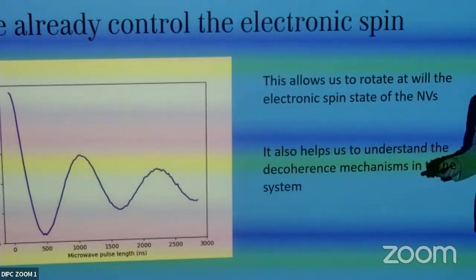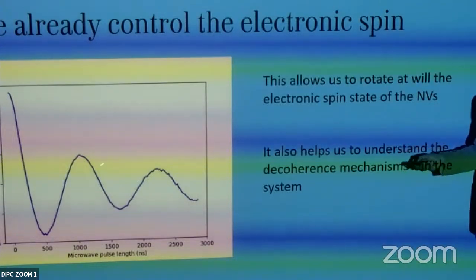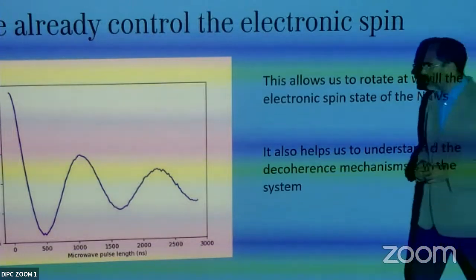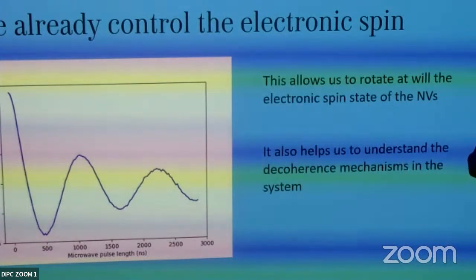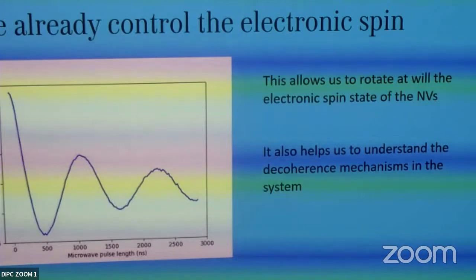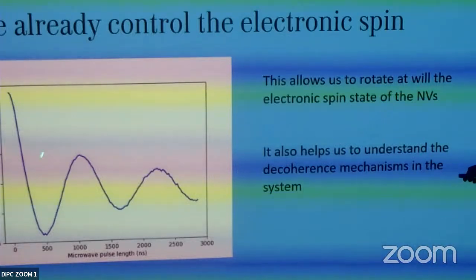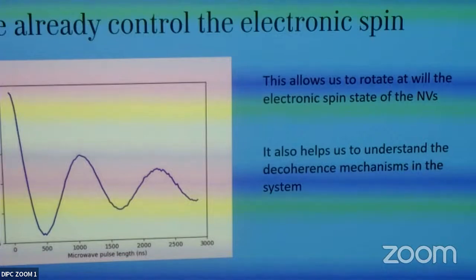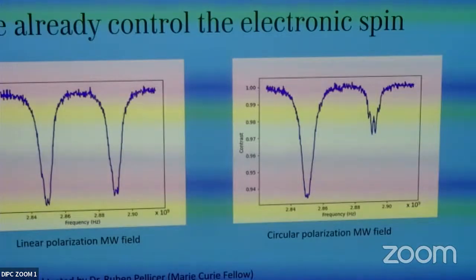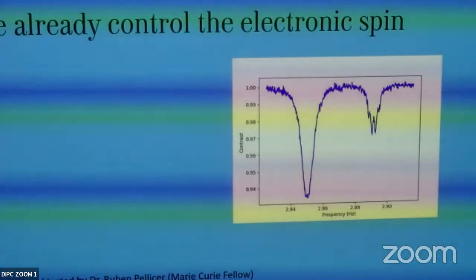We also demonstrate control by measuring Rabi oscillations: we vary the length of the microwave pulse, which allows us not only to fully flip the population from m_s = 0 to m_s = ±1, but also to create superposition states midway. The decay of the oscillations tells us the decoherence time of our system. This shows we can control the spin state of our NV centers.